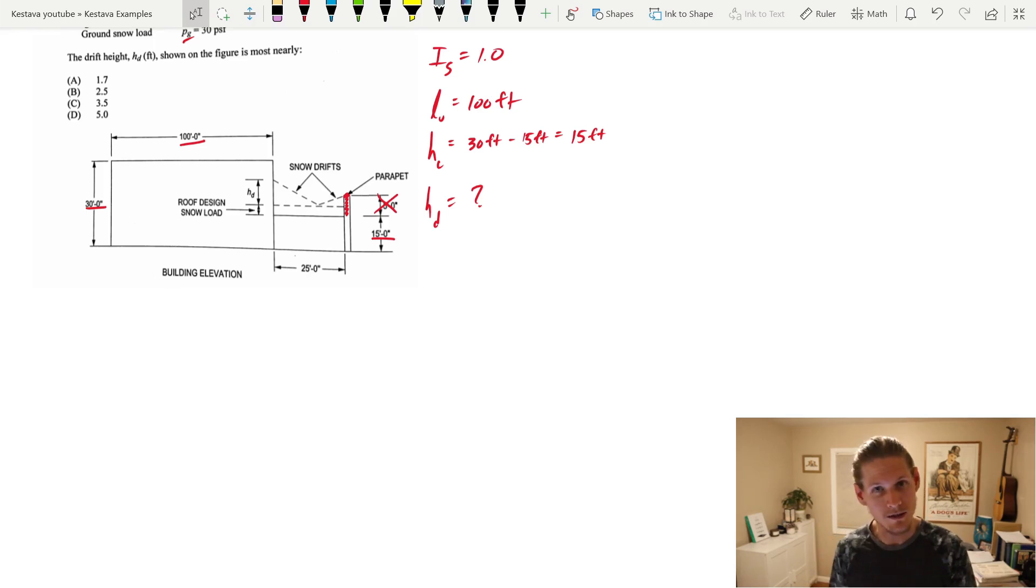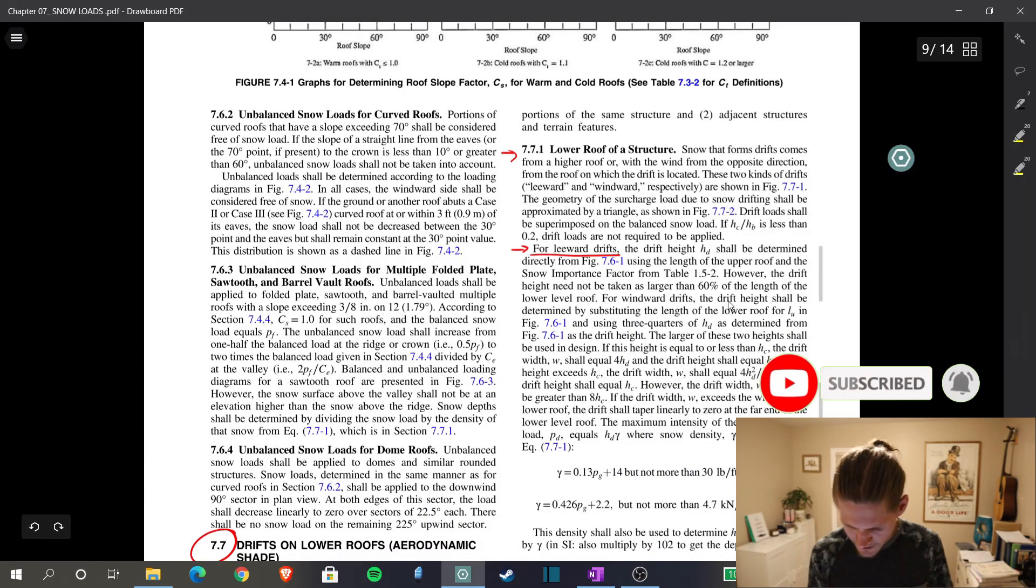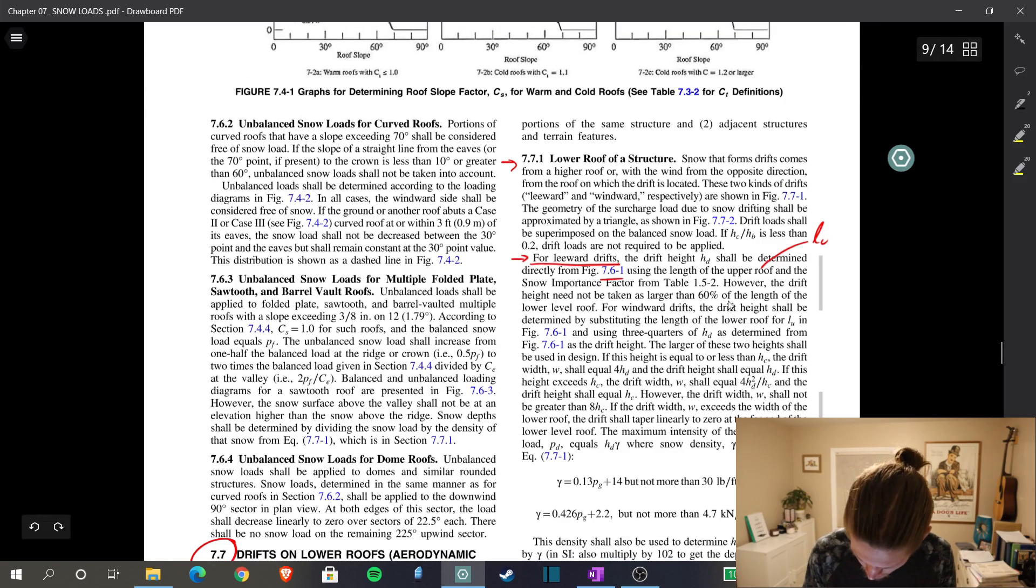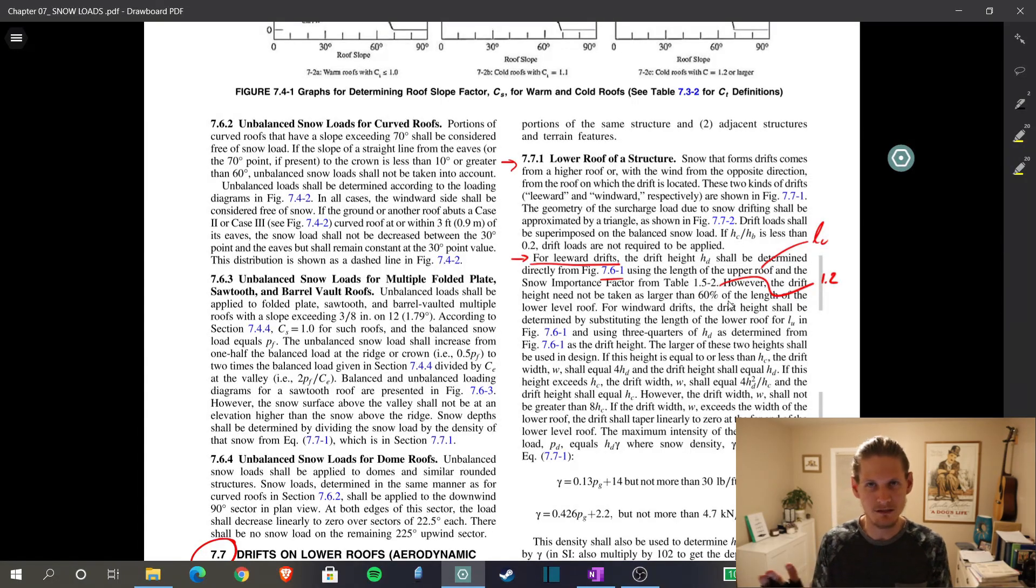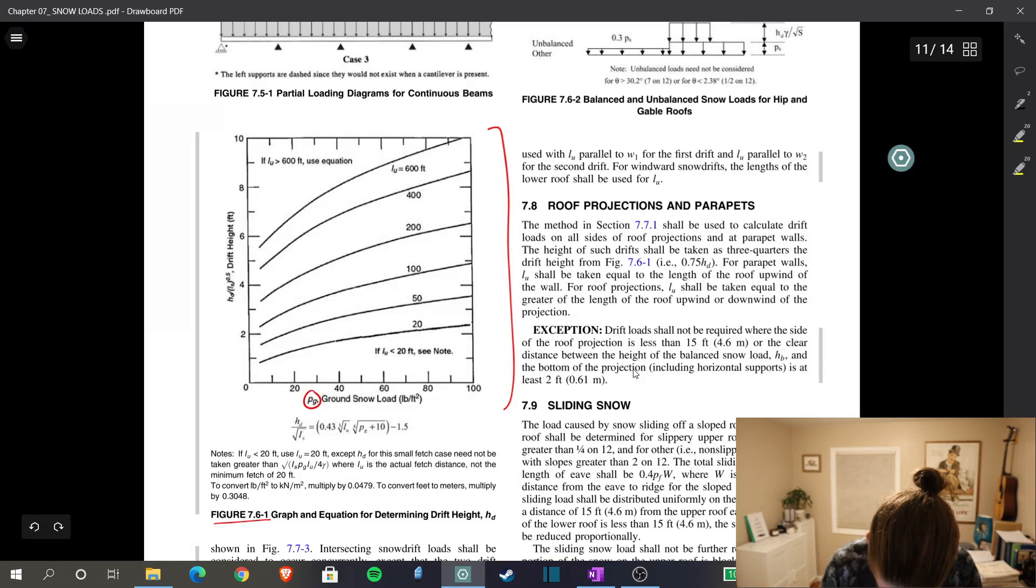So we have two cases. We have leeward and we have windward. Let's start with leeward. So for leeward drifts, the drift height h sub d shall be determined directly from figure 7.6.1 using the length of the upper roof, which is L sub u, and the snow importance factor of table 1.5-2, which we found to be 1.2. However, the drift height need not be taken as larger than 60% of the length of the lower level roof.